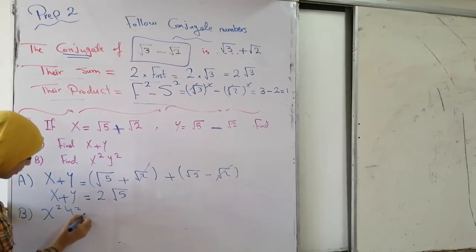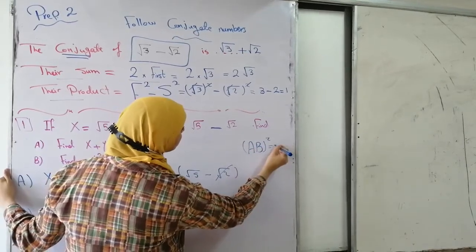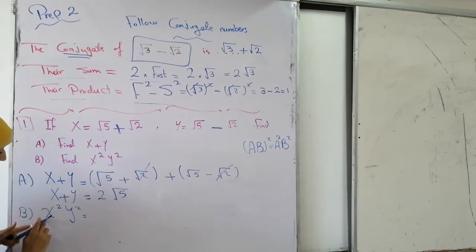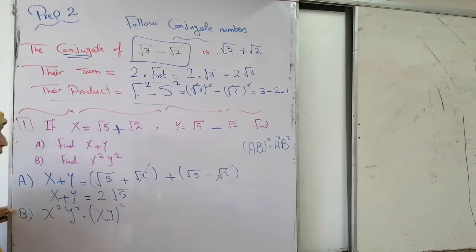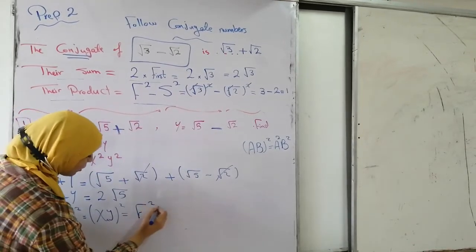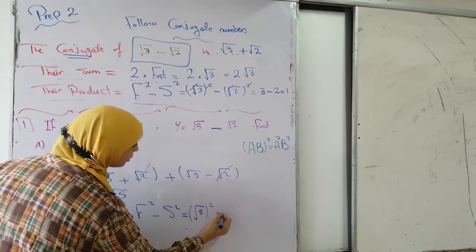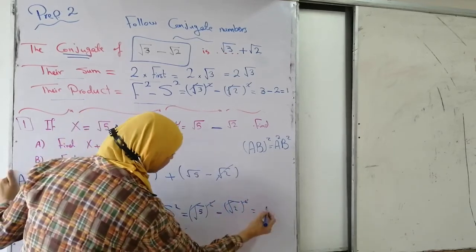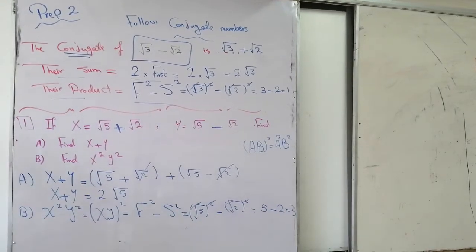Now find x squared times y squared. We know that (AB)² equals A² times B², so (xy)² equals x² times y². This means x squared y squared equals (xy)², and xy is their product. The product of conjugates equals first squared minus second squared: root 5 squared minus root 2 squared. The root and power cancel, giving 5 minus 2, which equals 3.